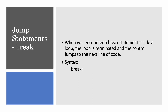For-each will be covered in the next video. Coming to jump statements: when you encounter a break statement inside a loop, the loop is terminated and control jumps to the next line of code. Break, as the word means, just breaks out of the loop — it does not go to the next iteration, it comes out of the loop entirely.